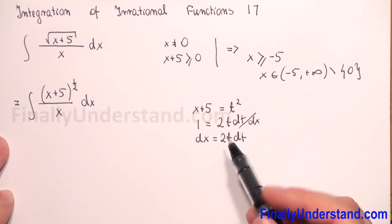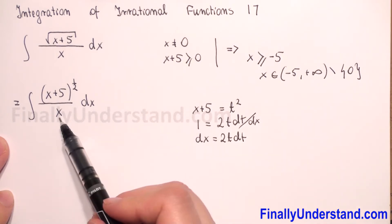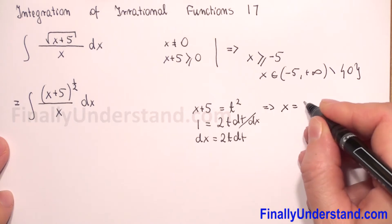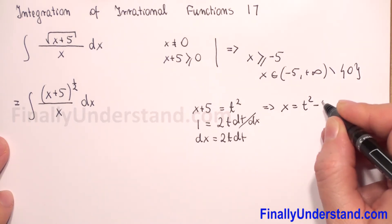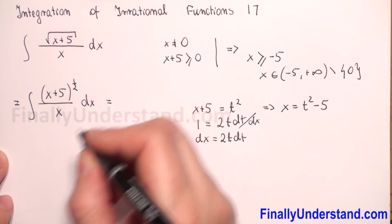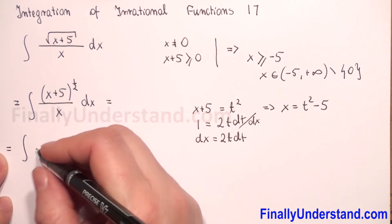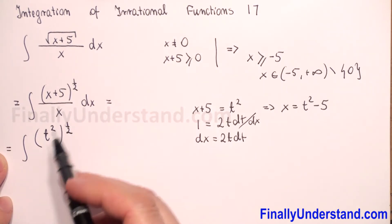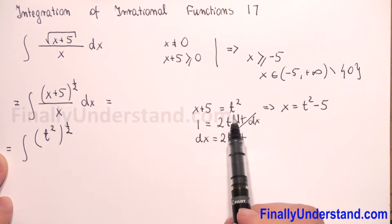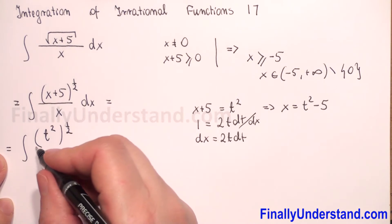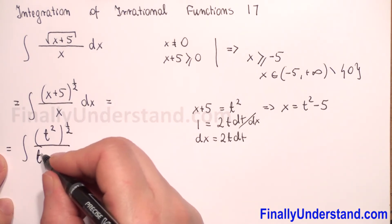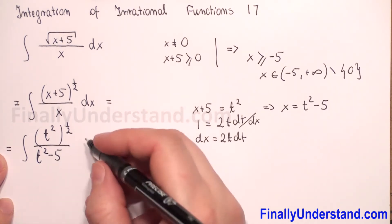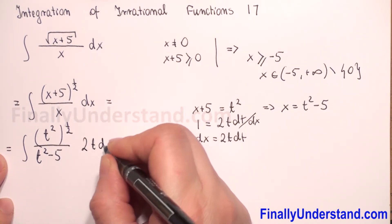Now we need to find x, because in the denominator we have only x. From the substitution equation x plus 5 equals t squared, we get that x equals t squared minus 5. We rewrite our integral: t squared to the power one half in the numerator, x is t squared minus 5 in the denominator, and dx is 2t dt.